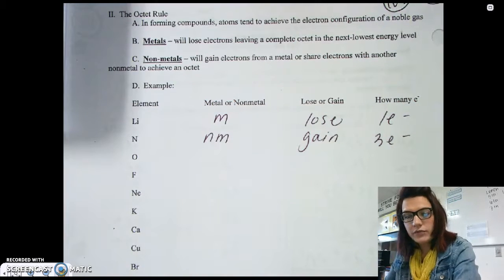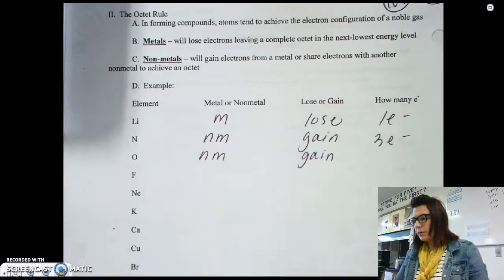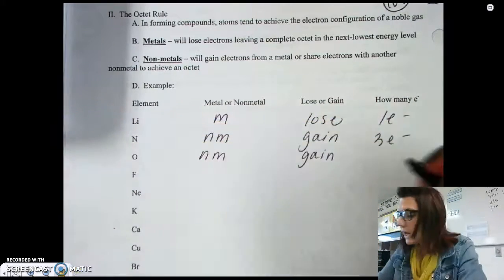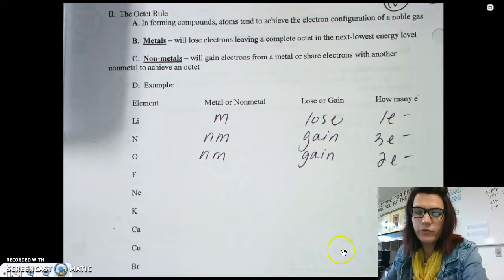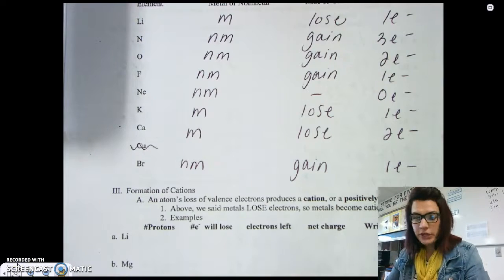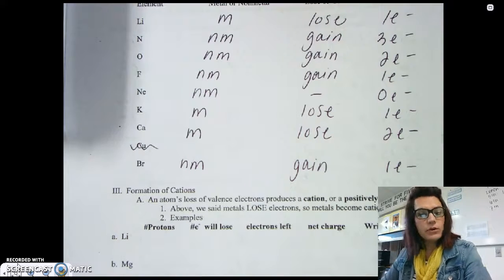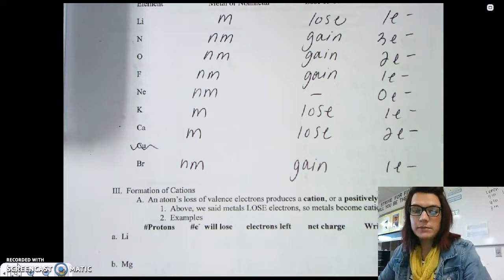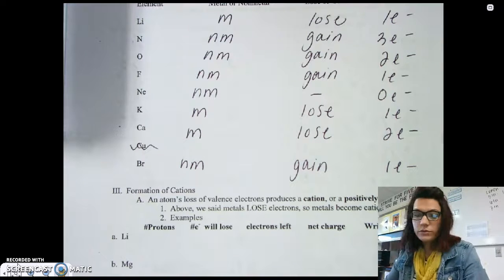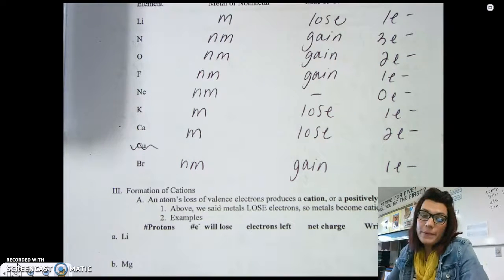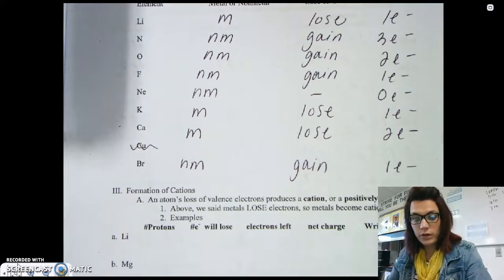Oxygen is a non-metal, so it will gain electrons. Looking at the periodic table, it needs to gain two electrons to become like neon. Go ahead and take a second to fill in the rest of this chart. Fluorine is a non-metal, one away from neon, so it gains one electron. Neon already has its octet, so it won't gain or lose any electrons and won't form a bond. Potassium will lose one electron, calcium will lose two electrons, and bromine will gain one electron.